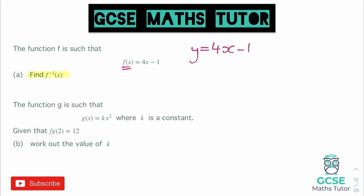First we'll add the 1 to the other side so we have y + 1 = 4x, and then we just need to divide by 4 so we have (y + 1)/4 = x, and to finish that off all I have to do is replace that y with an x and we have our inverse function.